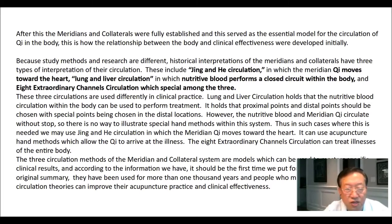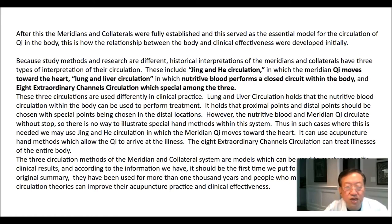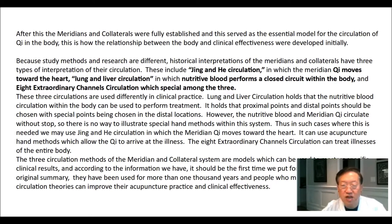These three circulations are used differently in clinical practice. Lung and liver circulation holds that nutritive blood circulation within the body can be used to perform treatment, with proximal and distal points chosen along with special distal points. However, the nutritive blood and meridian qi circulate without stop, so there is no way to illustrate special hand methods within this system. Thus, in cases where this is needed, we may use jing and he circulation, in which the meridian qi moves toward the heart. It can use acupuncture hand methods, allowing the qi to arrive at the illness. The eight extraordinary channel circulation can treat illness of the entire body. These three circulation methods are models which can be used to master specific clinical results — it should be the first time these are put forward together.